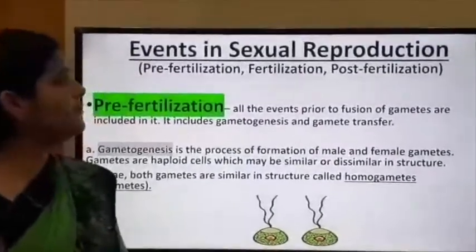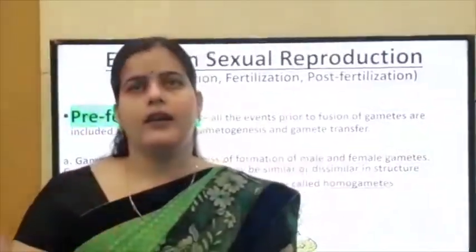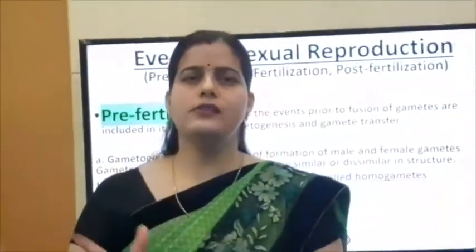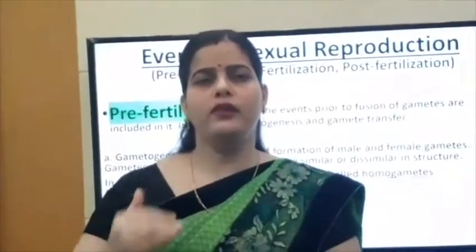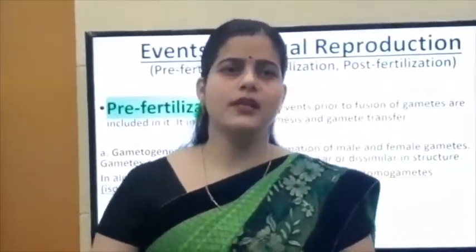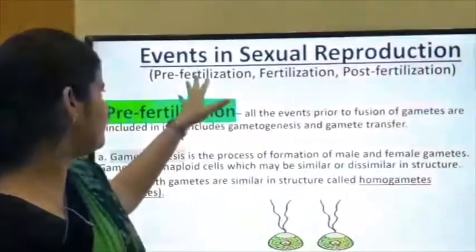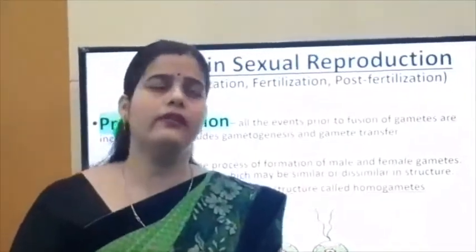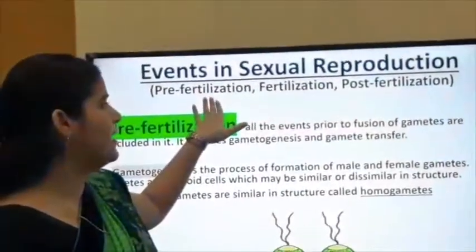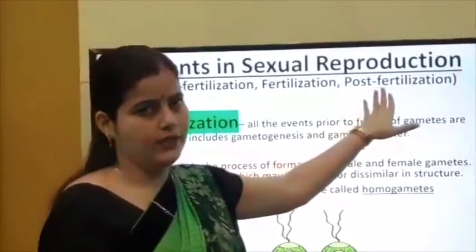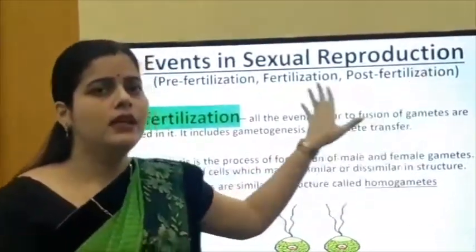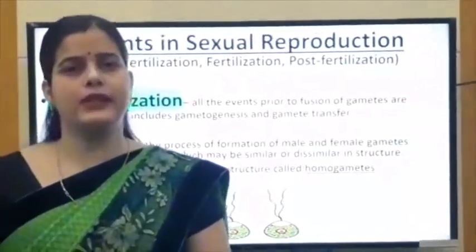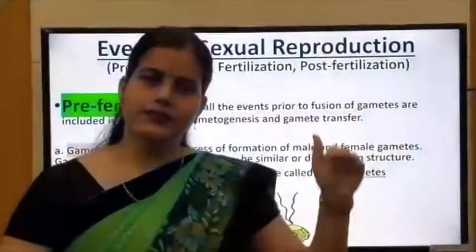Next are the events in sexual reproduction. Sexual reproduction is a sequential process. The events are mainly categorized into three: pre-fertilization events, fertilization, and post-fertilization events. We will discuss these three events one by one.